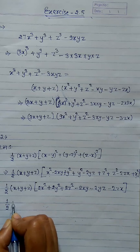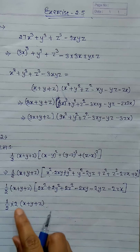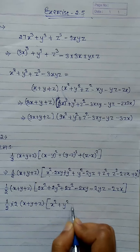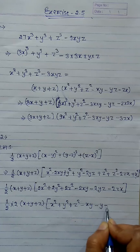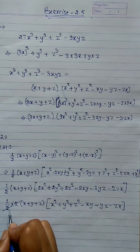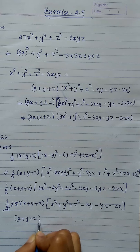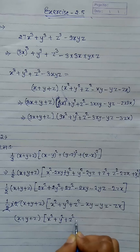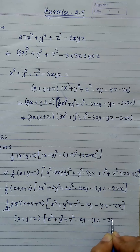Here 2 is common, so 1 upon 2 into x plus y plus z into 2 into x square plus y square plus z square minus xy minus yz minus zx. The 2 and 1 upon 2 cancel, giving x plus y plus z into x square plus y square plus z square minus xy minus yz minus zx.